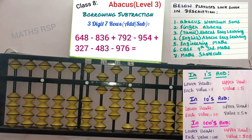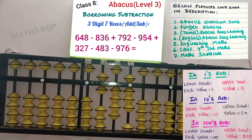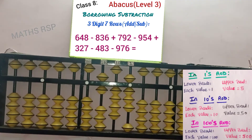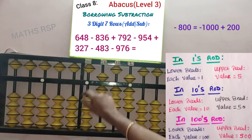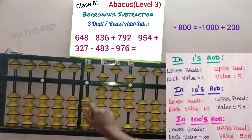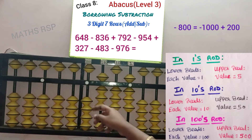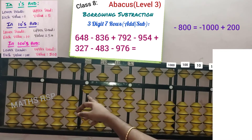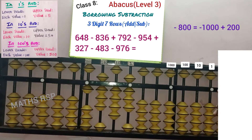Next, second row: minus 836. Minus means we need to remove the beads from the rod. Here in the 100 strad we don't have 8 beads to remove — only 6 beads are available. Hence apply big friend. Add 8's big friend here. However, in the 1000 strad we need to remove the bars, that is we should do minus 1000. But in the 1000 strad no beads are available to remove, so we should get 1 borrow bead here for applying the formula. And set the same borrow bead in the right side part, in the same 1000 strad.